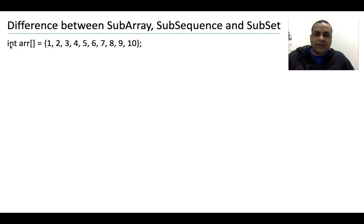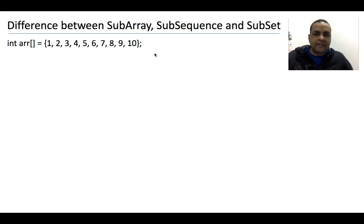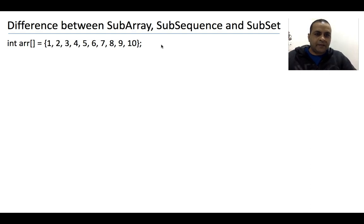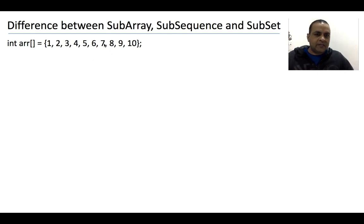So let's take an input array. The array is an integer array starting from 1 to 10. I have intentionally kept the array as sorted so that the differences are more clear to us. In all three cases, whether it is subarray, subsequence, or subset, we are talking about a part of the original array. Subarray will have elements from this array only, subsequence will also have elements from this array, and subset also has elements from this array.